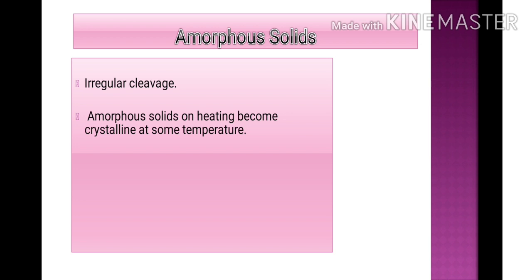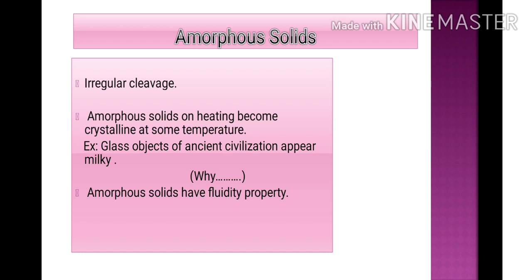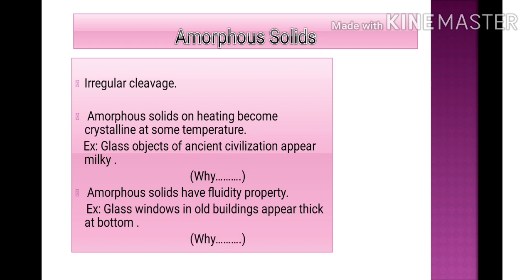Amorphous solids on heating become crystalline at some temperature. For example, glass objects from ancient civilizations appear milky because over long years they undergo heating and cooling treatment, becoming partially crystalline. Amorphous solids also have a fluidity property. Glass windows in old buildings appear thicker at the bottom because glass, being an amorphous or pseudosolid, moves very slowly — and after 10 or 20 years, the bottom becomes thicker.